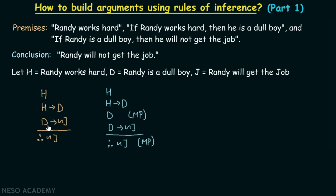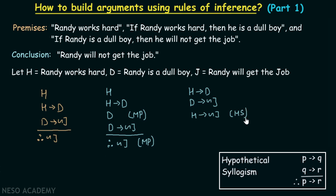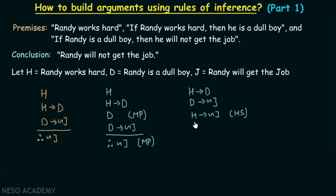Now let's take H implies D and D implies not J as our two premises. From these, we can conclude H implies not J by using hypothetical syllogism — when we have p implies q and q implies r, we can get p implies r. Then taking premise H together with H implies not J, we can apply modus ponens to obtain not J, which is our final desired conclusion.